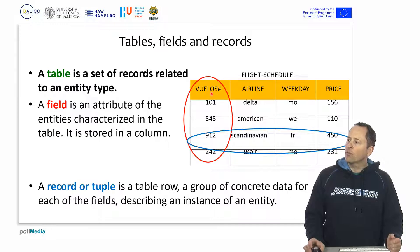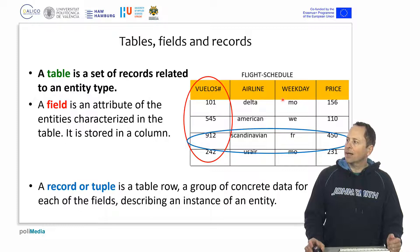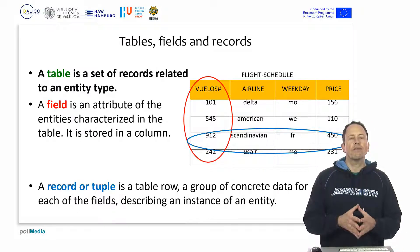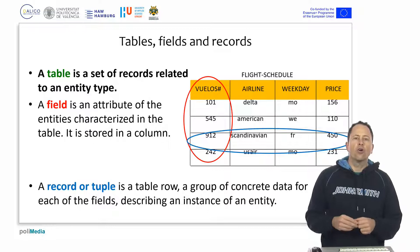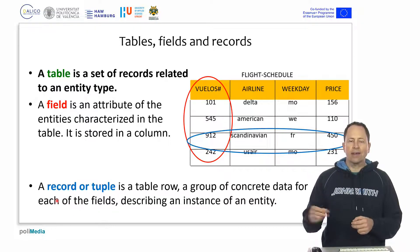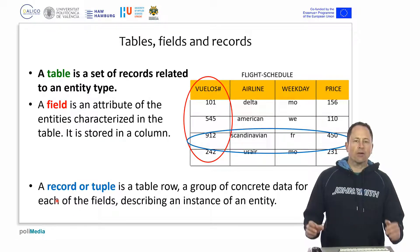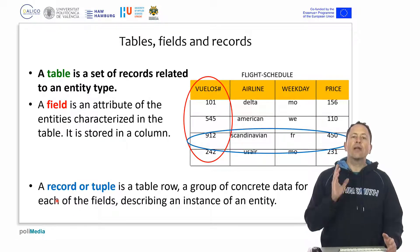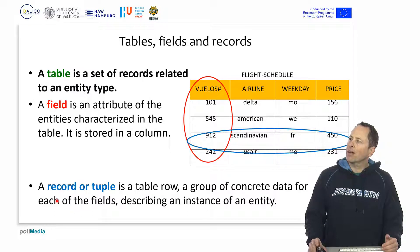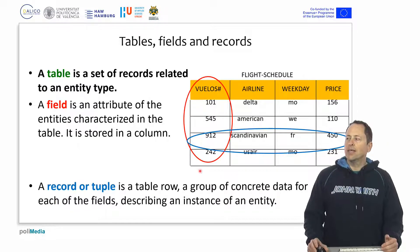For example, the flight number, the airline name, the day of departure, or the price. In the case of a table of cars, it can be the color, the cylinder displacement, or the diameter of the wheels. A field is an attribute and it is represented by a column of the table.